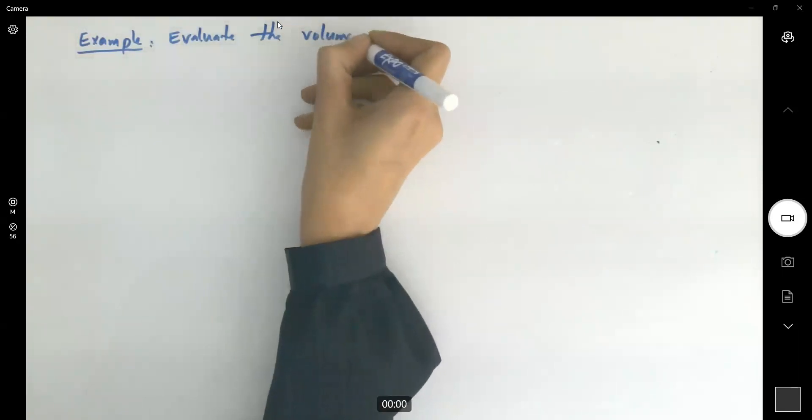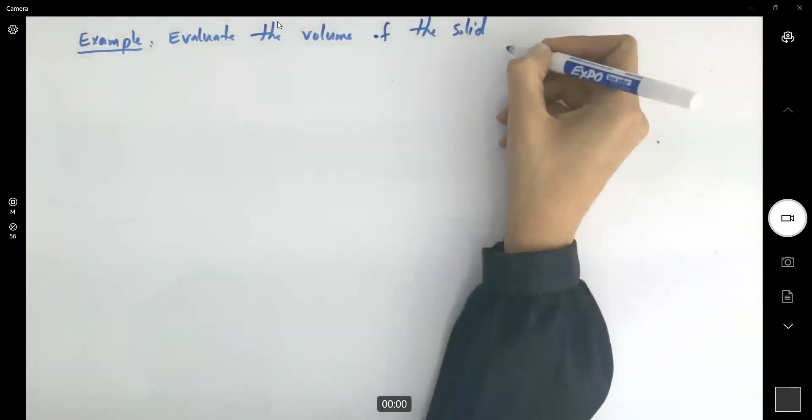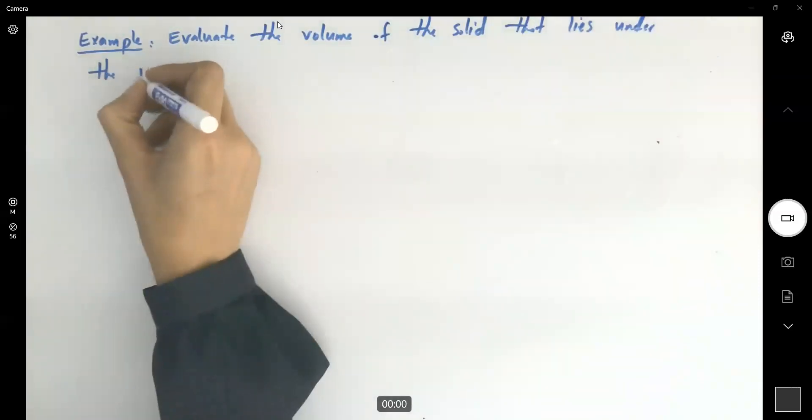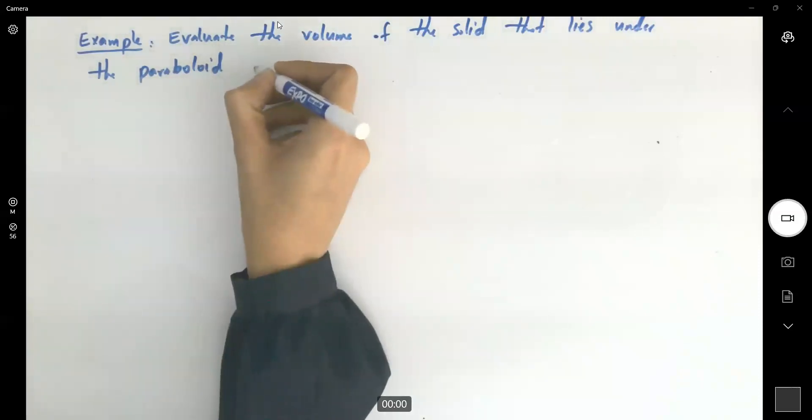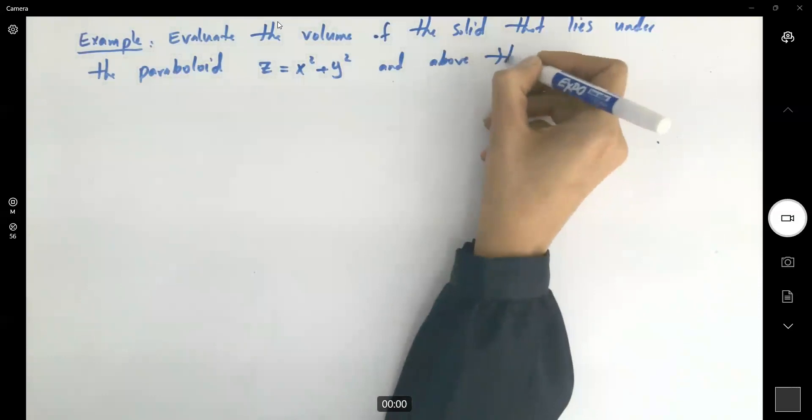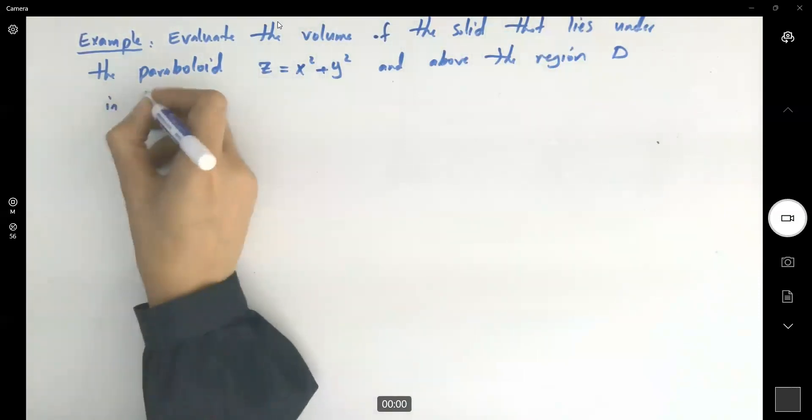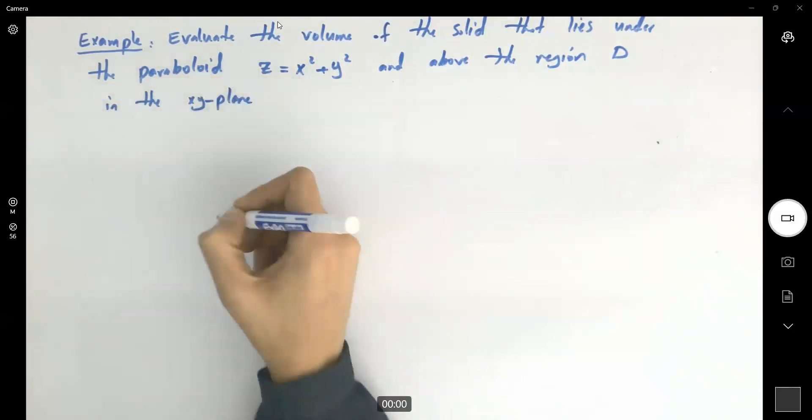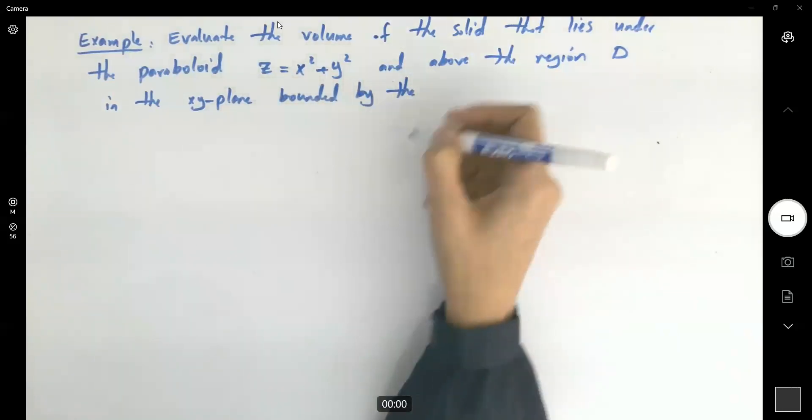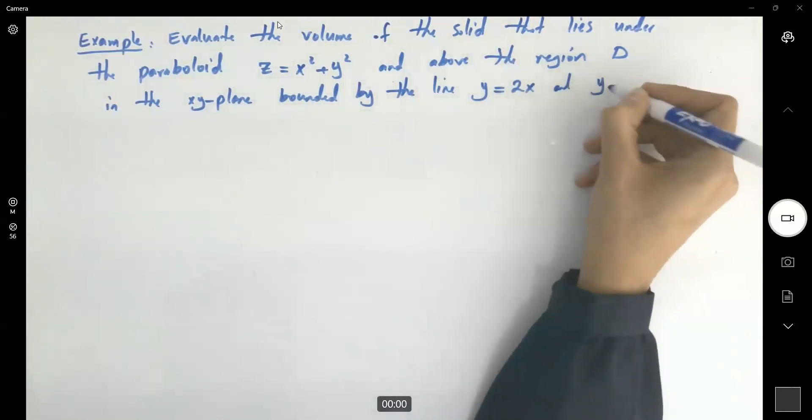Now it specifically asks you to find the volume of the solid that lies under the paraboloid, which is given to us as z equals x squared plus y squared, and above the region D in the xy-plane, bounded by the line y equals 2x and the parabola y equals x squared.